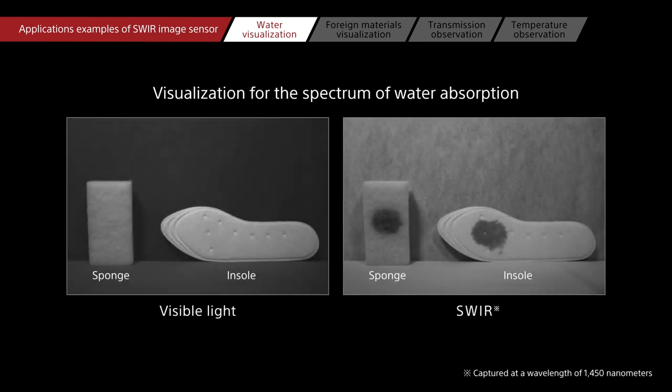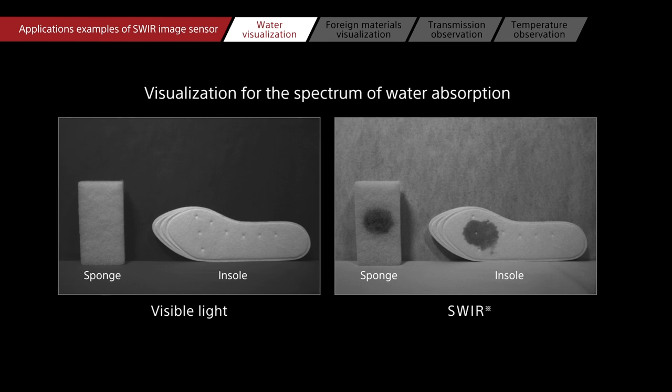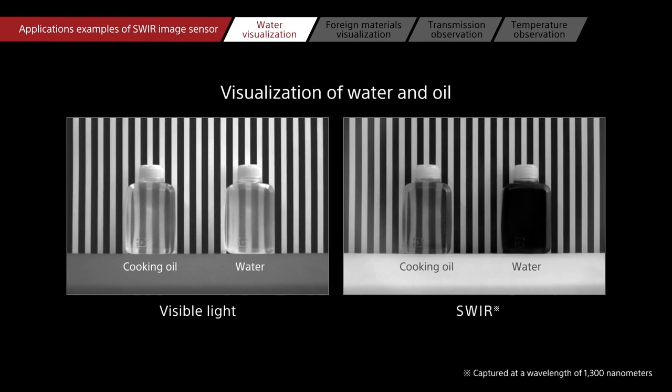In SWIR images, wet areas can be instantly recognized as they will appear darker due to less reflectivity. Using SWIR images, water and oil are easier to distinguish compared to visible light images.